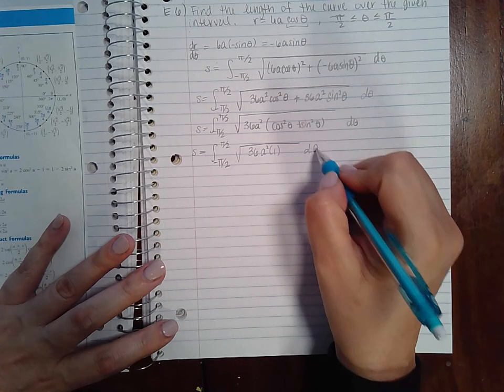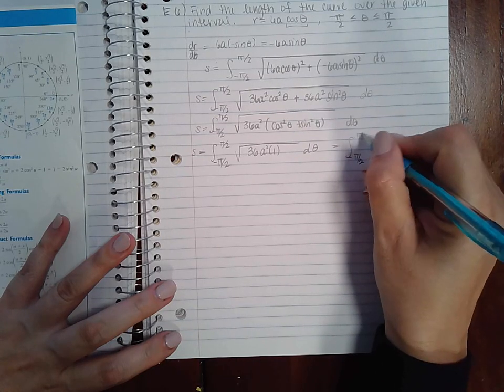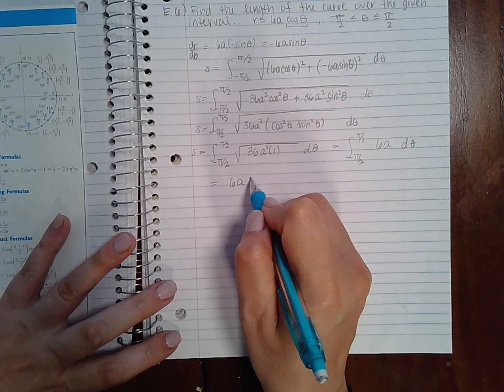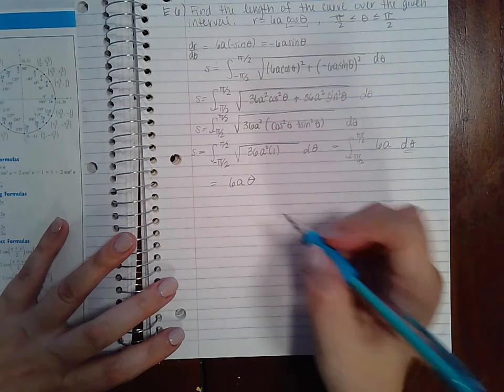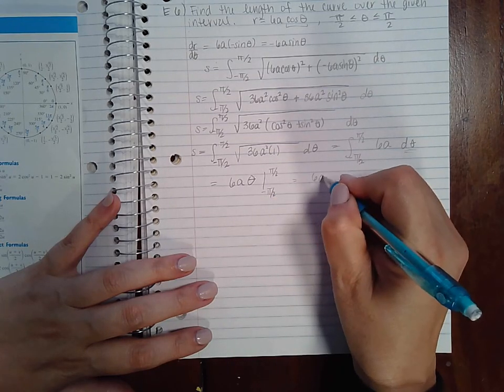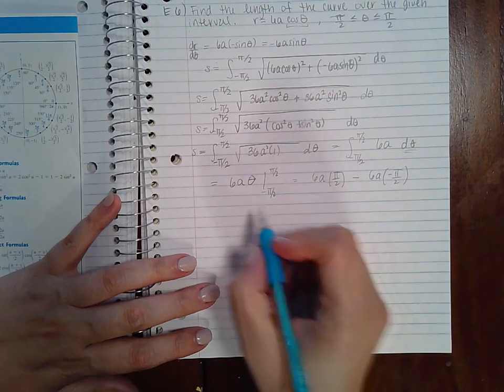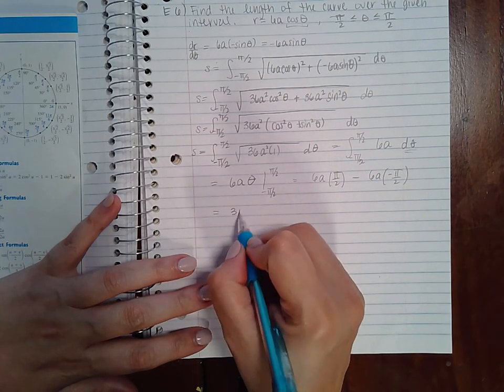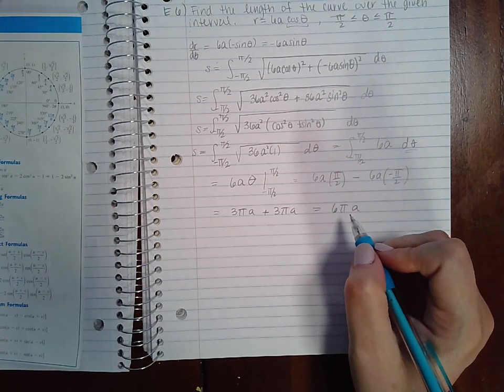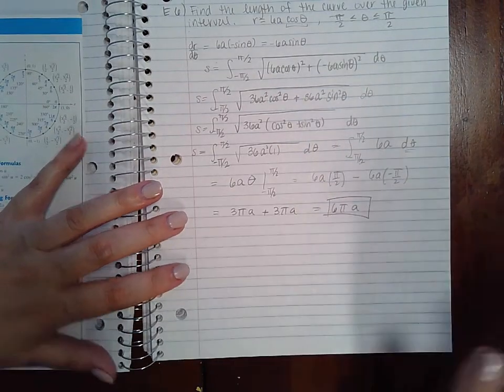So really, I just have the square root of 36 a squared, which is just six a. Now, remember, this is like a constant. So when you integrate a constant, you just end up multiplying by the variable you're integrating with respect to. So we end up with six a times pi over two minus six a times negative pi over two, which gives me three pi a plus three pi a, which is six pi a. Or six a pi, same thing. If you're doing this in the computer, it should accept either version.